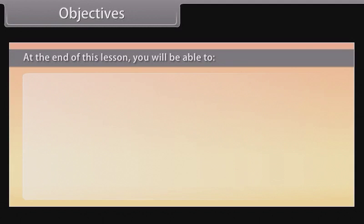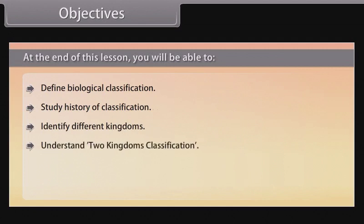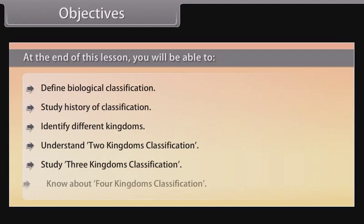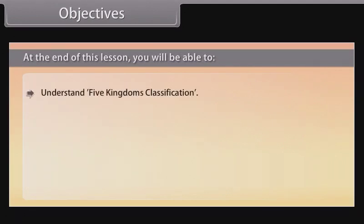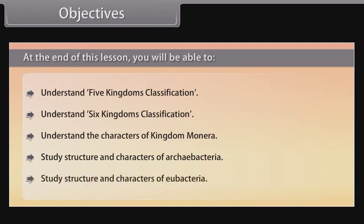At the end of this lesson, you will be able to: define biological classification, study the history of classification, identify different kingdoms, understand two kingdoms classification, study three kingdoms classification, know about four kingdoms classification, understand five and six kingdoms classification, understand the characters of kingdom Monera, and study the structure and characters of Archaebacteria and Eubacteria.